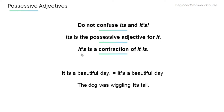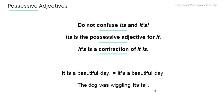Also remember not to confuse 'its' and 'it's' with an apostrophe. 'It's' is the contraction of 'it is.' For example: 'It is a beautiful day' is the same as 'It's a beautiful day.' However, in 'The dog was wriggling its tail,' 'its' is the possessive adjective for 'it' and modifies 'tail.'